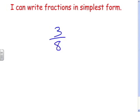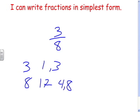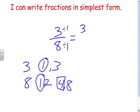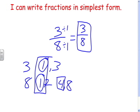Next example: 3 eighths. The factors of 3 are just 1 and 3. The factors of 8 are 1, 2, 4, and 8. The only common factor is 1. Since there's no common factor besides 1, 3 eighths is already in simplest form — it cannot be reduced any further.